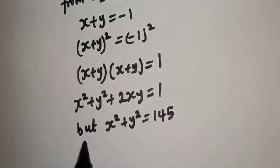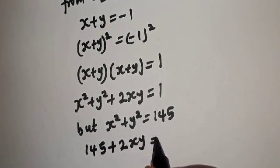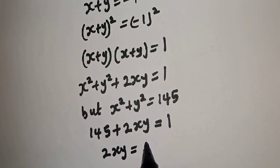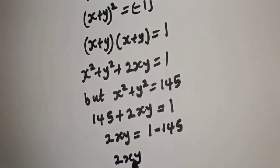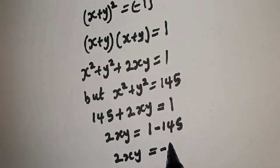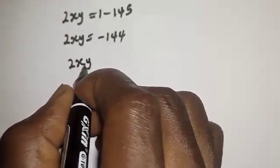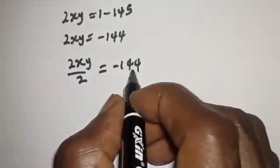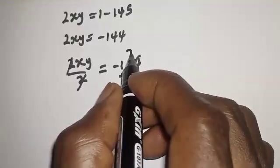Substituting, we have 145 plus 2XY equals 1. Then 2XY equals 1 minus 145, so 2XY equals minus 144. Dividing both sides by 2, XY equals minus 72.